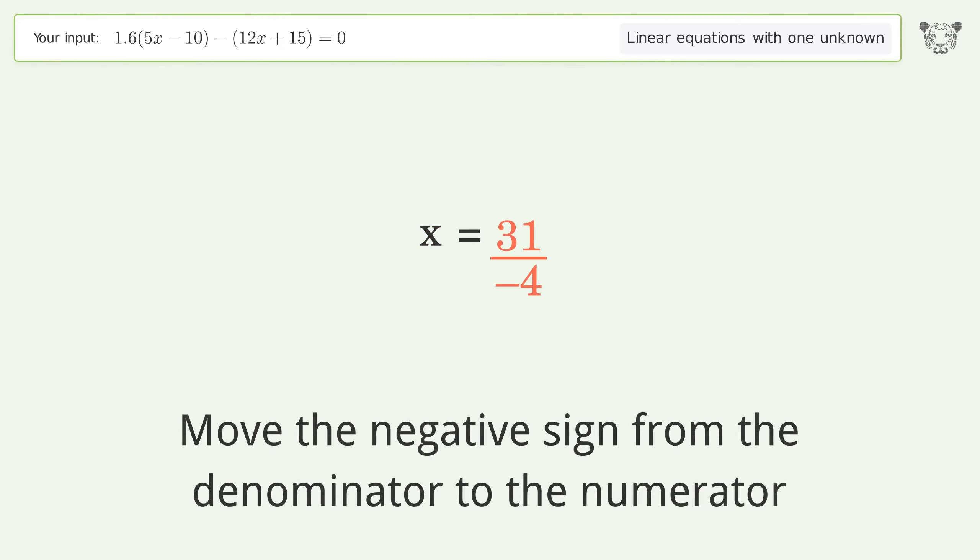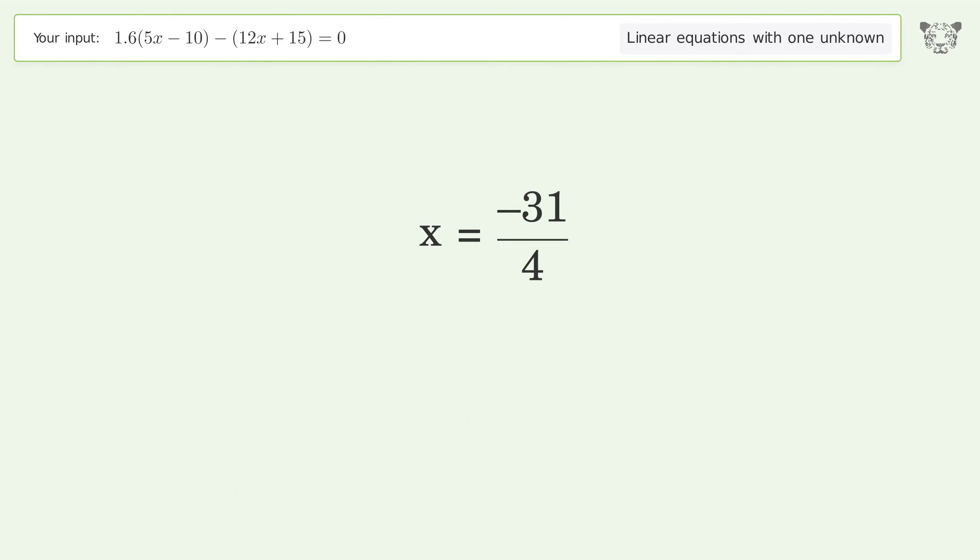Move the negative sign from the denominator to the numerator. And so the final result is x equals negative 31 over 4.